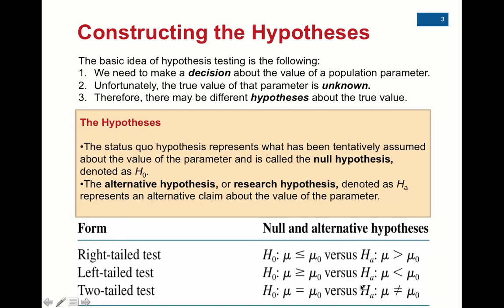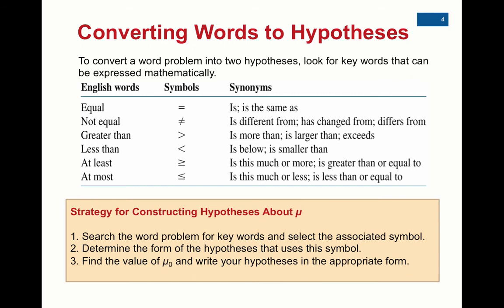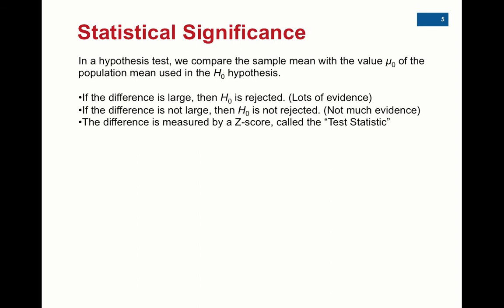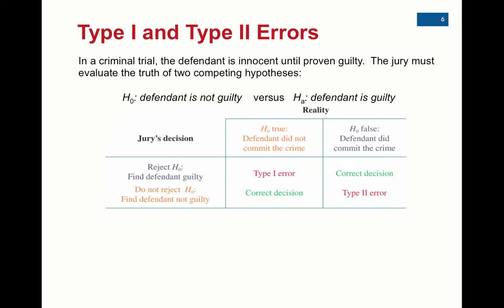You have to write out these hypotheses — this will be worth a point on every problem I grade. We look for key words, write the form of the test, and identify mu sub-zero, which is the mu from the null hypothesis. In a hypothesis test, we compare a sample mean — our data, our evidence — with the value of mu sub-zero.